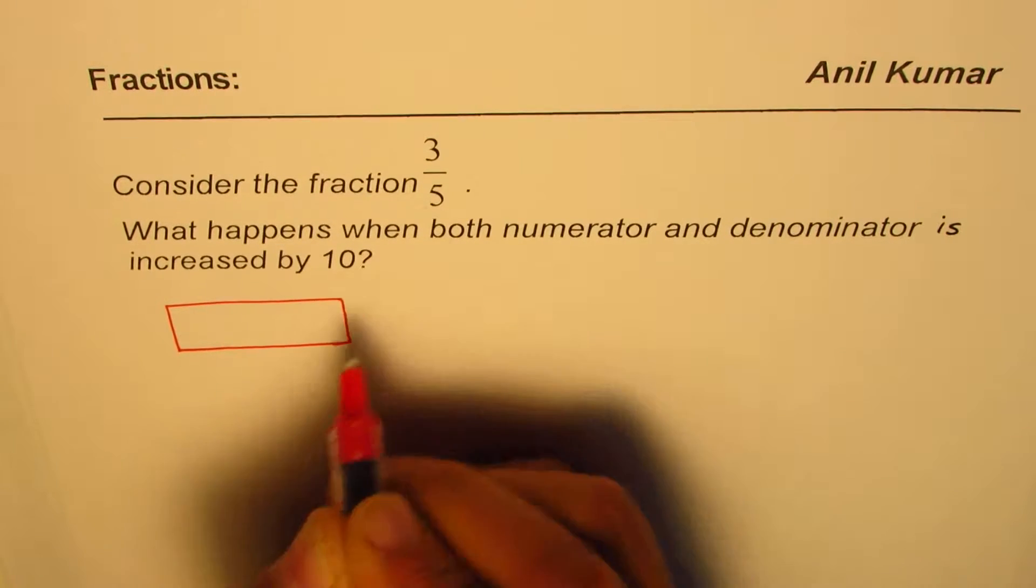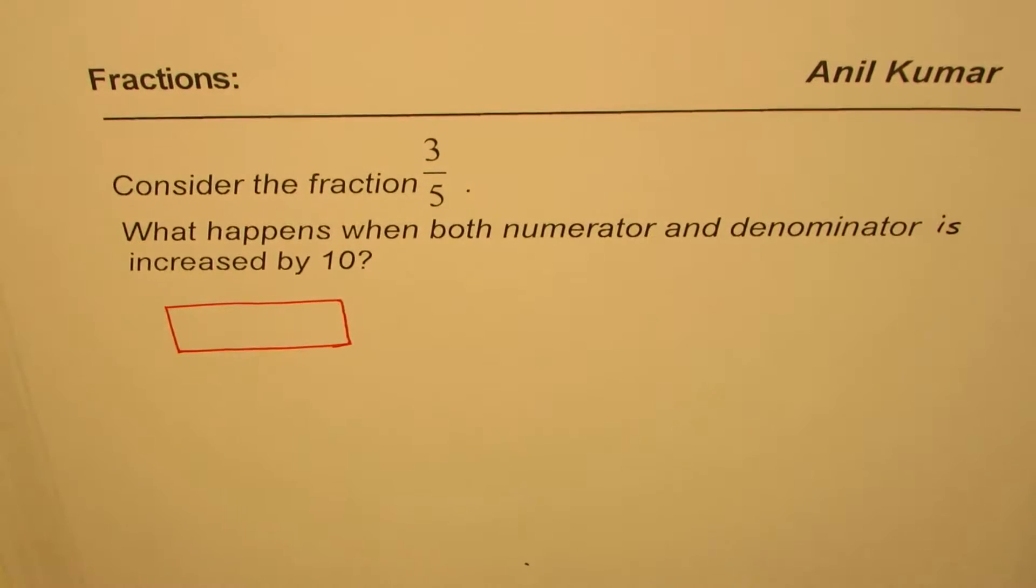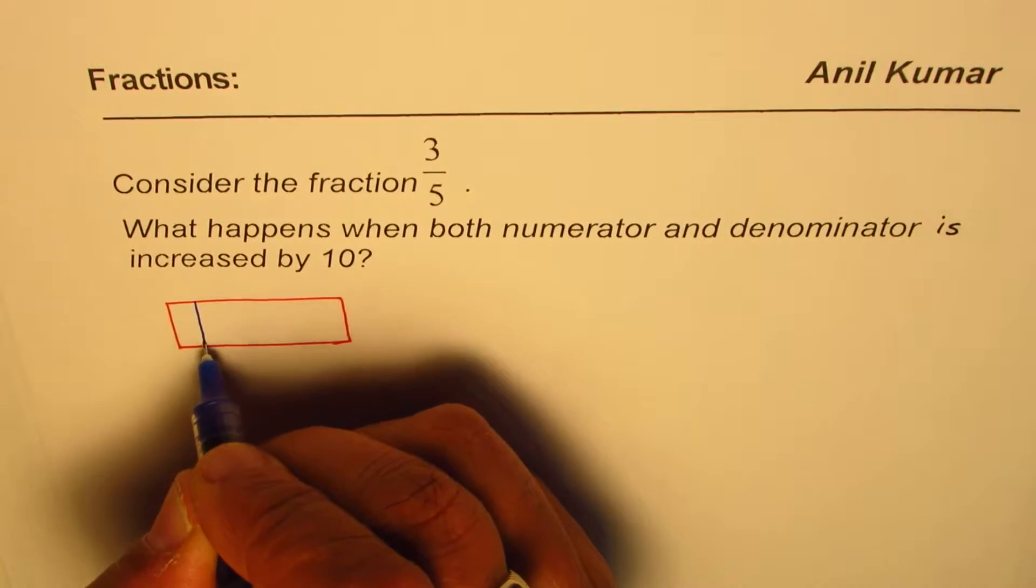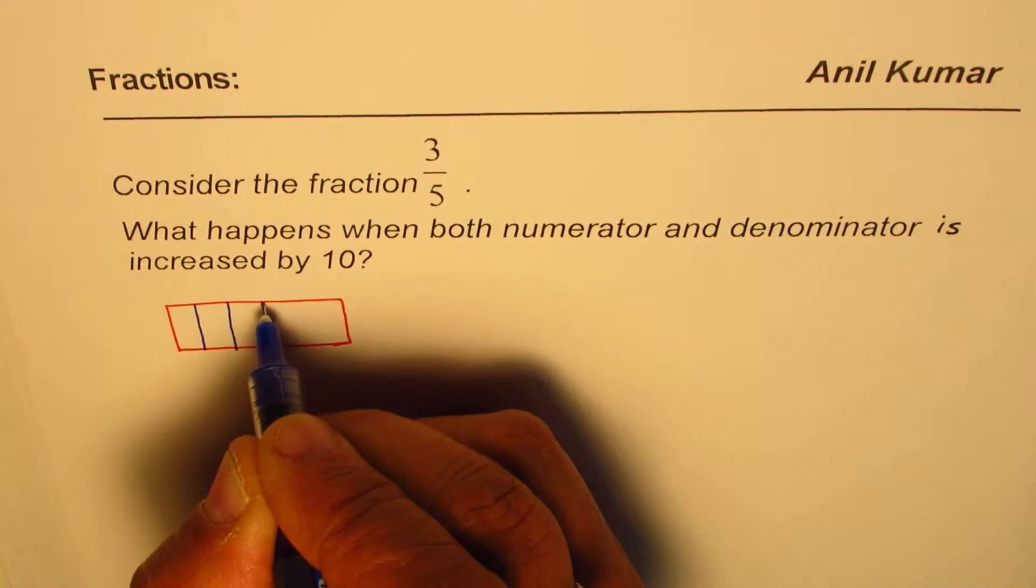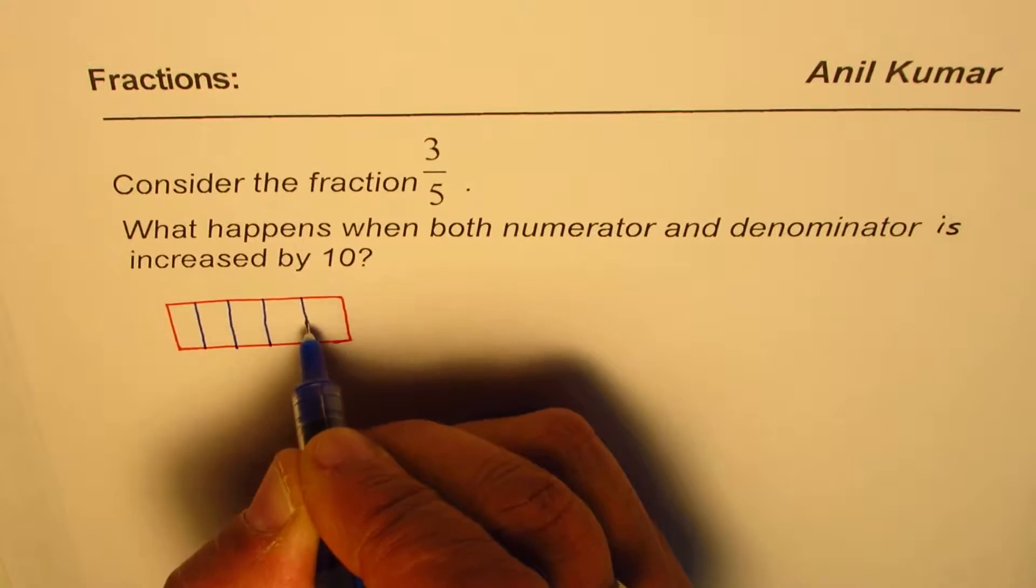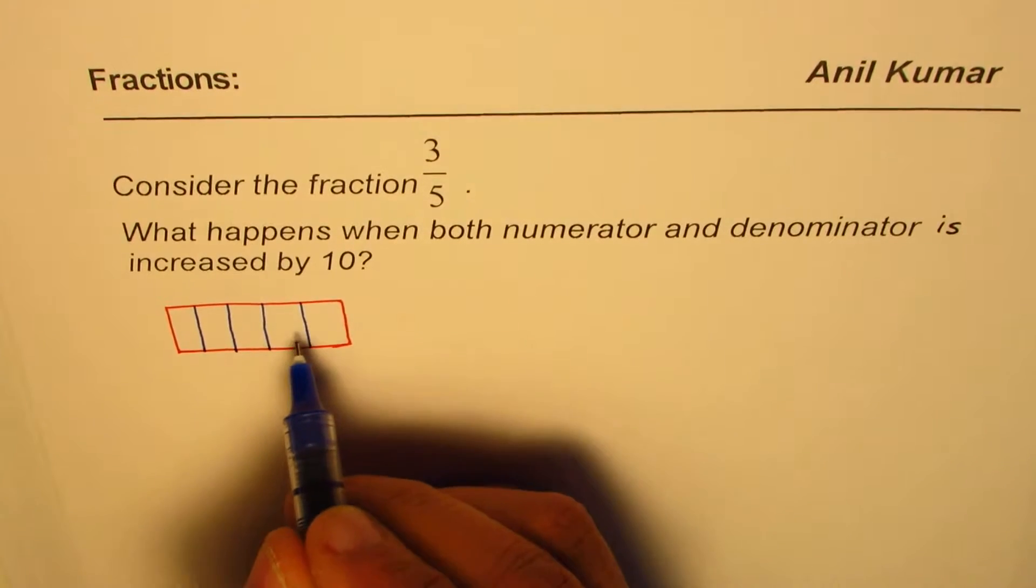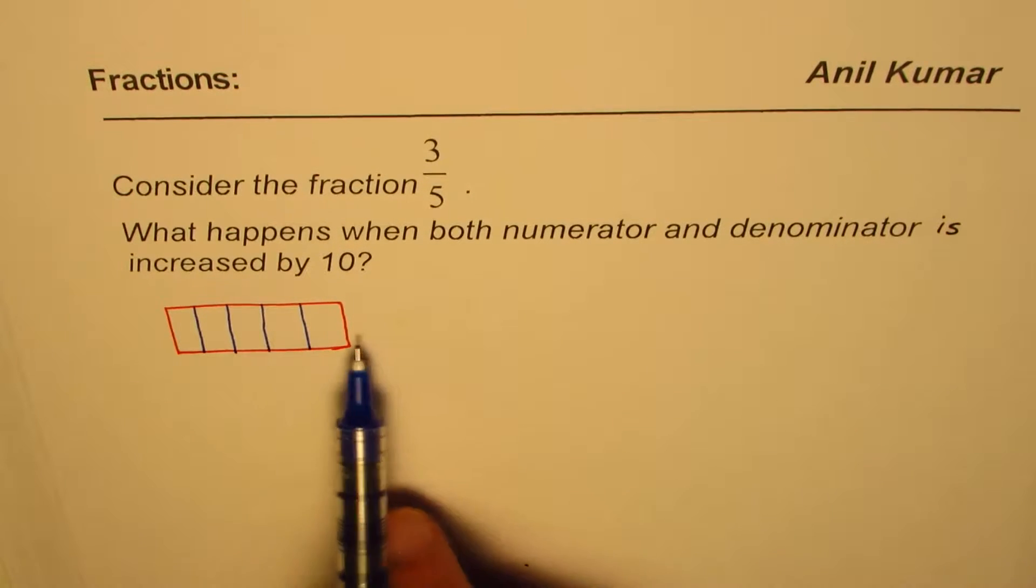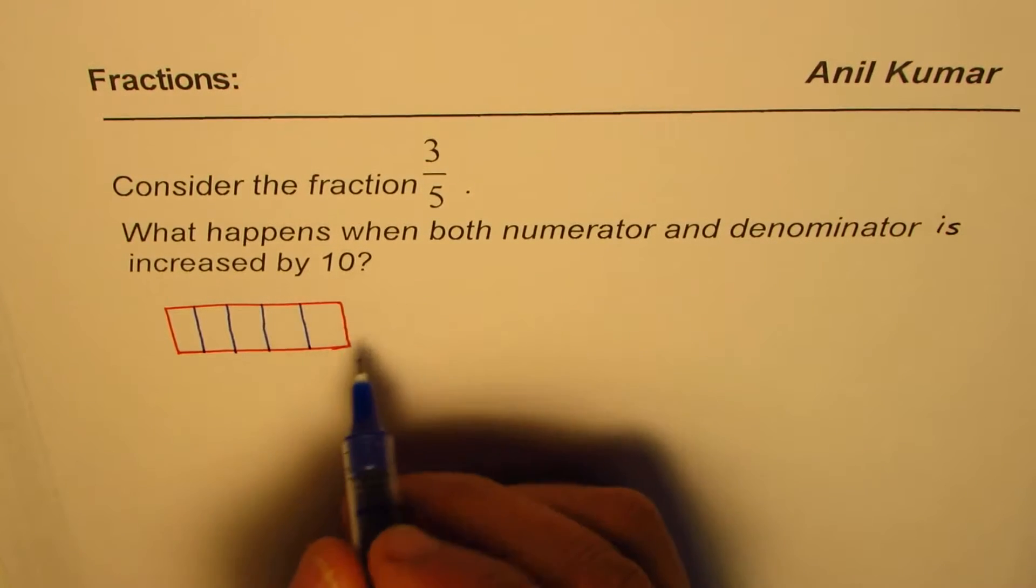Now in this bar, we have to divide it into 5 equal parts since denominator is 5. So let's say this is 1, then we have 2, then we have 3 and then let's say these are equal parts. Looks bigger but let's say these are equal parts. So we have a bar which is divided into 5 equal parts.